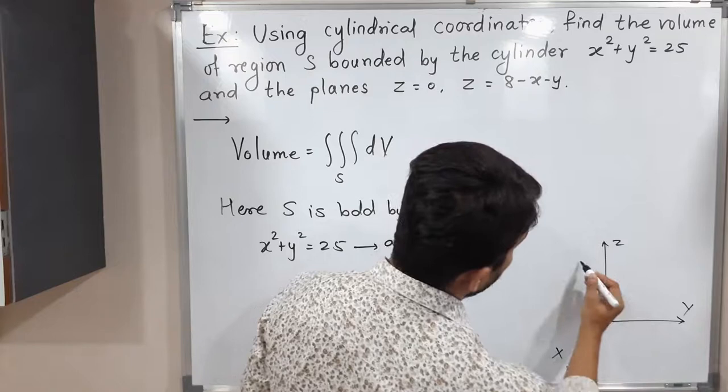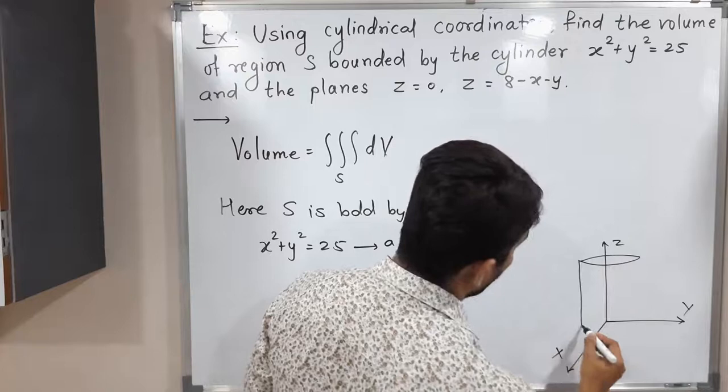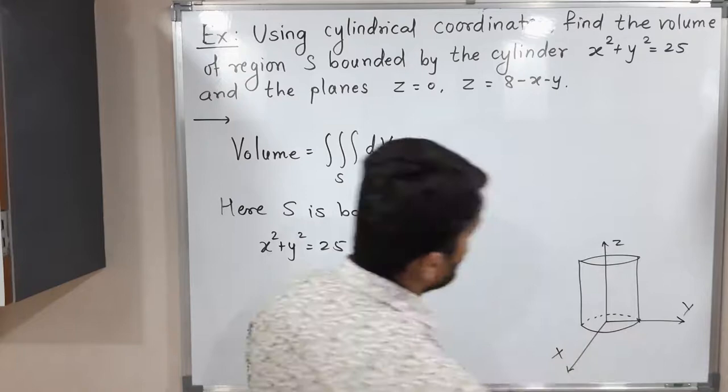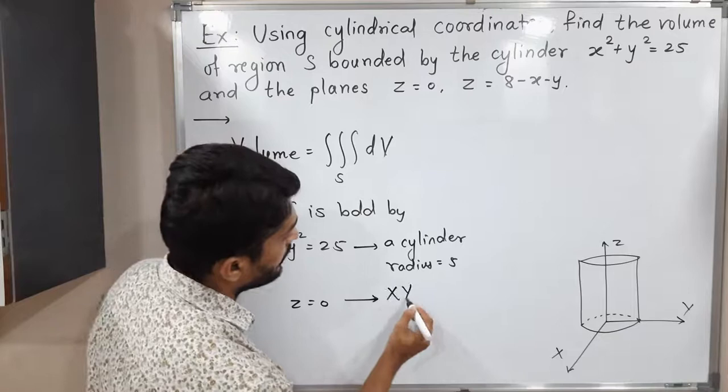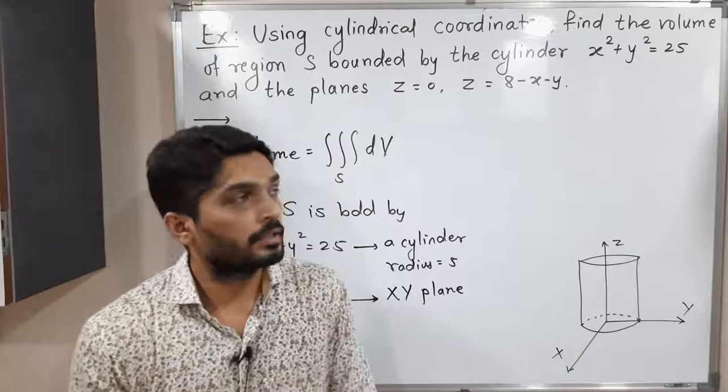I'm drawing a cylinder with radius 5 — this is the rough sketch. The second boundary is z = 0, which represents the xy-plane. So the region is bounded below by the xy-plane and by this cylinder.